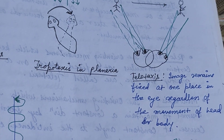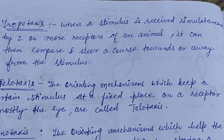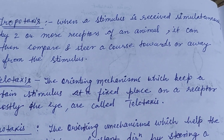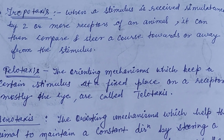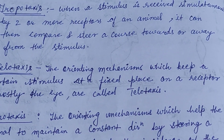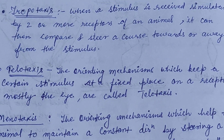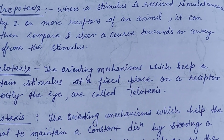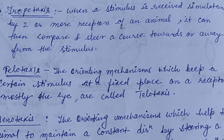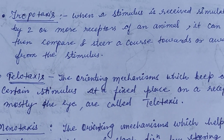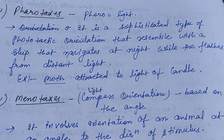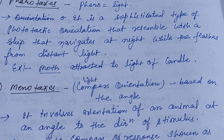In telotaxis, the image remains fixed at one place in the eye regardless of movement of the eye, head, or body. Tropotaxis can also be defined as when a stimulus is received simultaneously by two or more receptors of an animal, which can then compare and steer a course towards or away from the stimulus. Telotaxis is the orienting mechanism which keeps a certain stimulus at a fixed place on a receptor — mostly the eye.